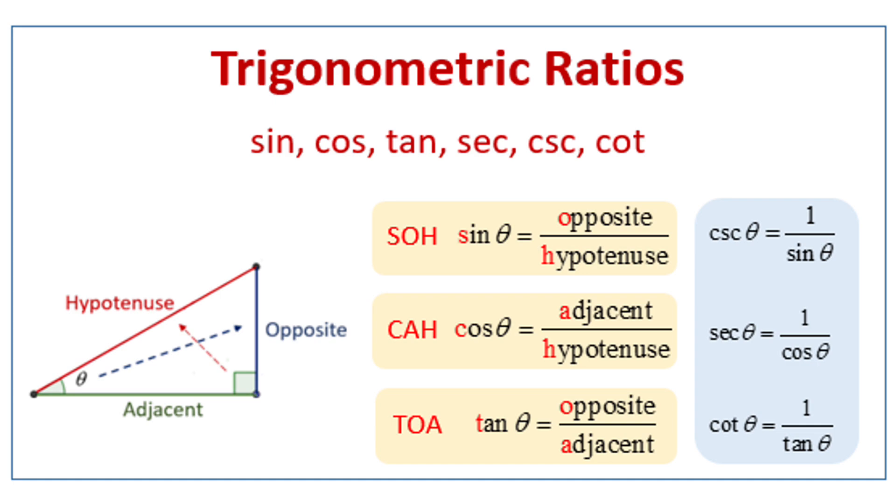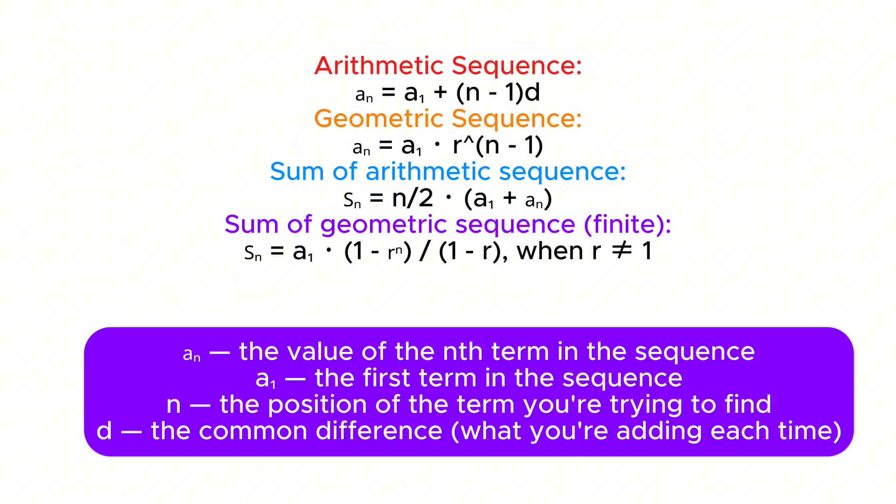Now let's move on to sequences and series. An arithmetic sequence means to add the same number. Formula is a1 plus n minus 1 times d. For the geometric sequence, which is where you multiply each term, like for example for the arithmetic sequence it was 1 plus 2 plus 3 plus 4, for this one it's 1 times 2 times 3 times 4. The formula is a1 times r to the power of n minus 1.